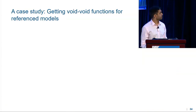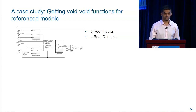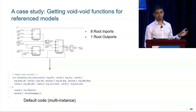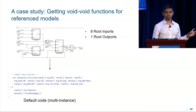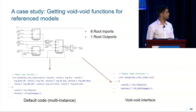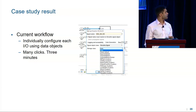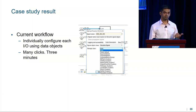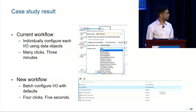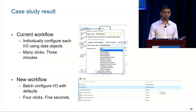Let me dive into a case study. I have a model here — it's not very large, it's got eight root inports and one root outport. By default, when I build this as a referenced model, I'll get code where all the root I/O is passed as arguments. This is pretty good default code because it supports multi-instance, but many of you prefer to generate void-void functions. The current way to do that is by configuring each root I/O with a data object, which is kind of painful with nine root I/O and requires many clicks — it took me three minutes. With the new workflow, you can batch configure I/O in the code perspective. This took me four clicks or about five seconds. If I had 100 inports or outputs, it would still take four clicks and five seconds.